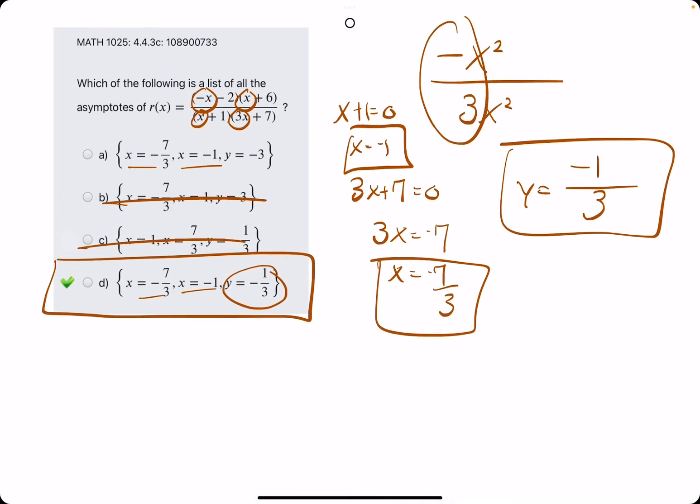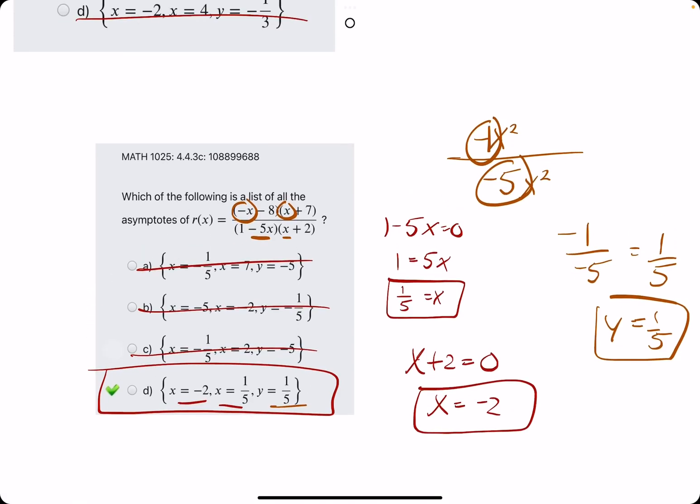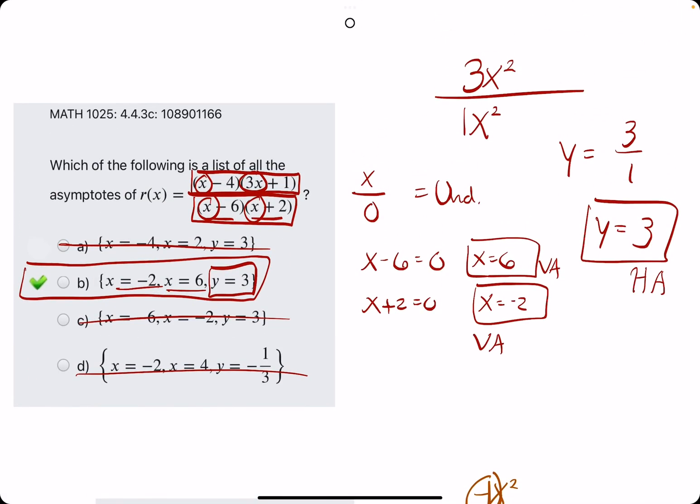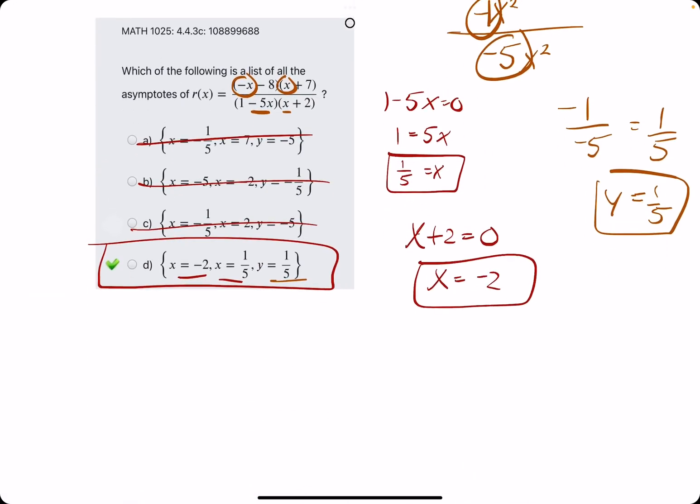So we're looking for negative one-third as our asymptote. I think that's a, yeah, okay. I hope this helps. If you have any questions on asymptotes or how they relate to these problems, please let me know.